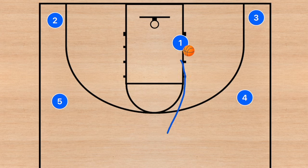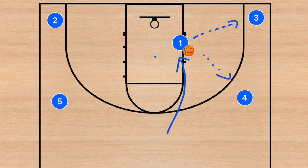If player one drives to the rim, he has four options to pass to. He can pass to three, he can pass to four, he can pass to five — which might be a bit risky — and he can pass to player two. And of course he can score himself.